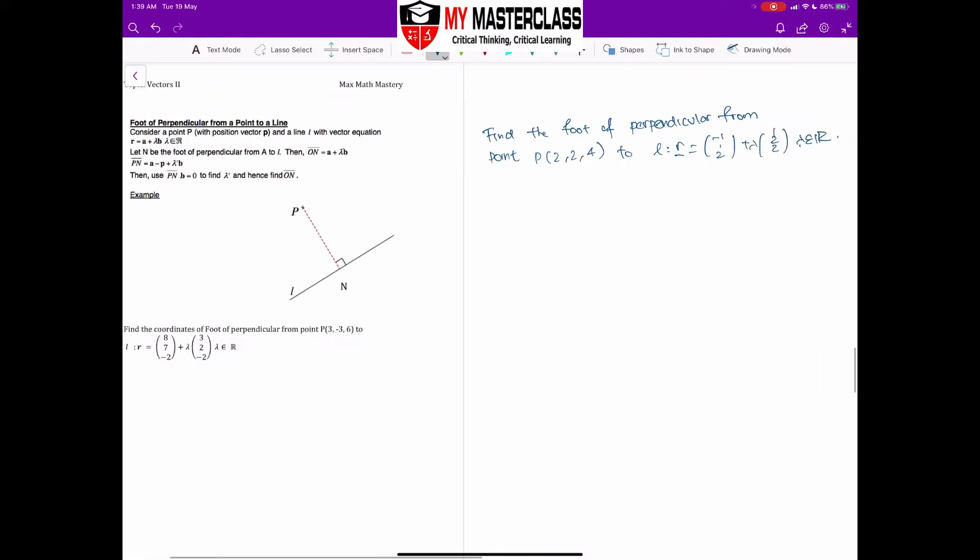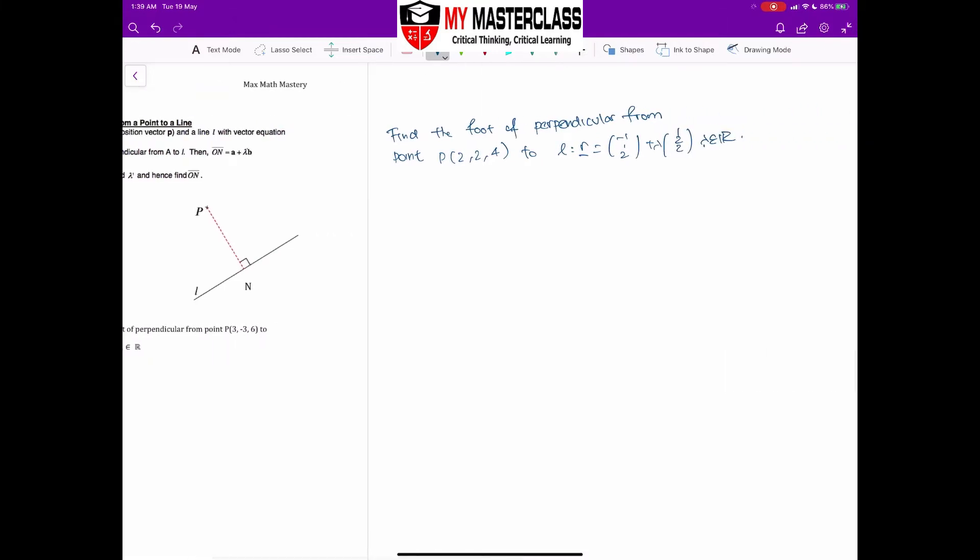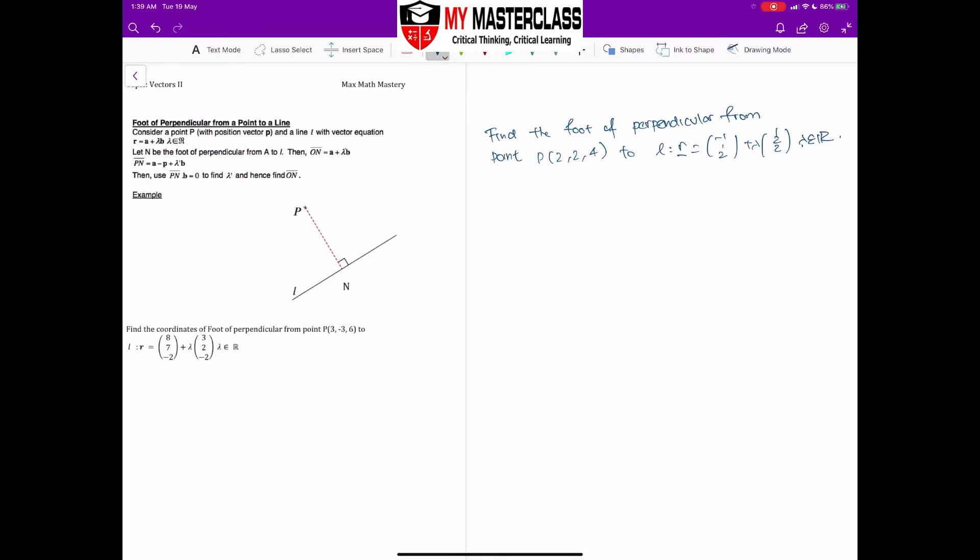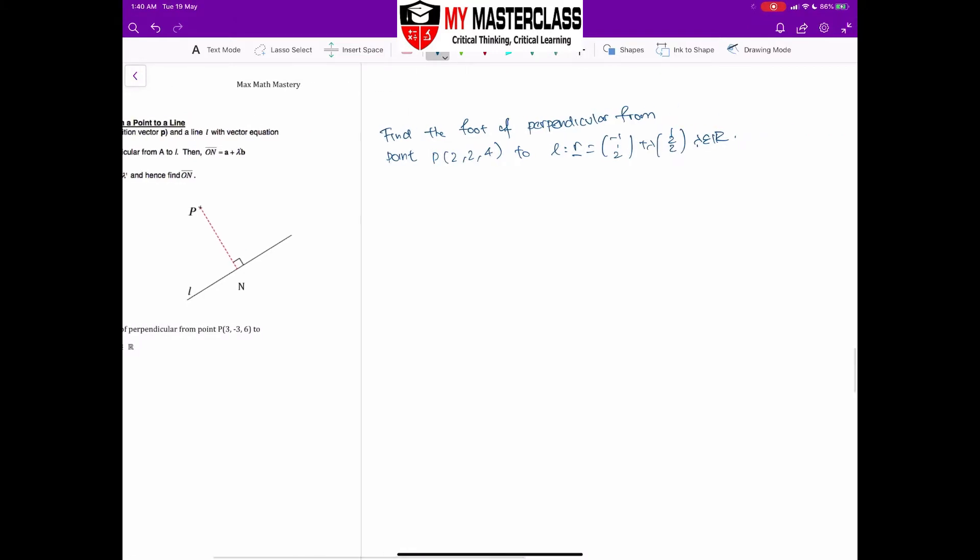So foot of perpendicular essentially just simply means that if I draw a straight line down from a point to a line, it will hit the right angle at the line there. And that will be the particular coordinate I'm interested to find. So over here, I'm going to give another example before I'm going to let you try the example yourself.